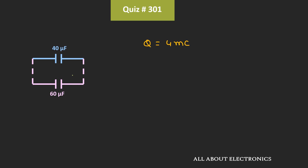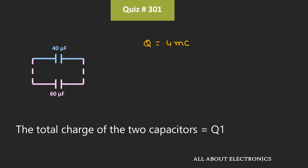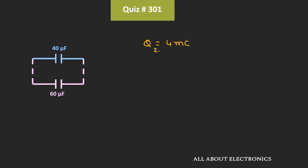That means before the connection of the second capacitor, the charge stored across the first capacitor is equal to 4mC. Now once we connect the second capacitor, the same charge will get shared with it. But the overall charge will remain the same — that means after connection, the total charge Q2 equals Q1.